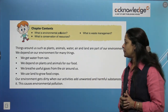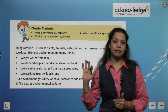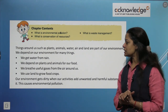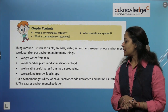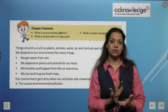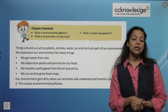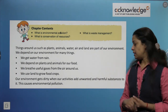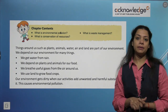Things around us such as plants, animals, water, air, and land are part of our environment. We all need and depend on our environment for many things — we get water from rain, we depend on plants and animals for our food, we breathe useful gases from the atmospheric air, and we use land to grow food crops. Our environment gets dirty when our activities add unwanted and harmful substances to it, and this causes environmental pollution.